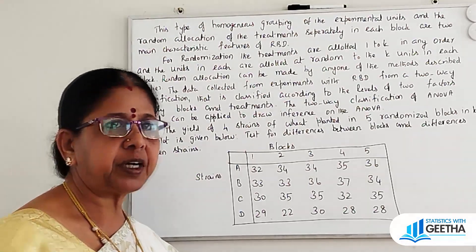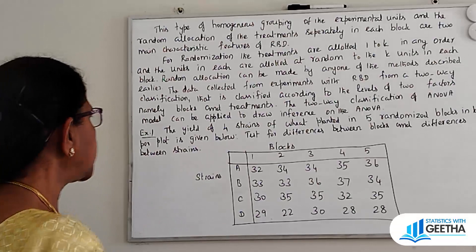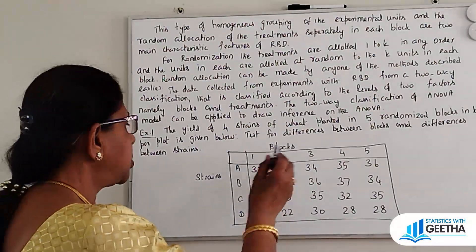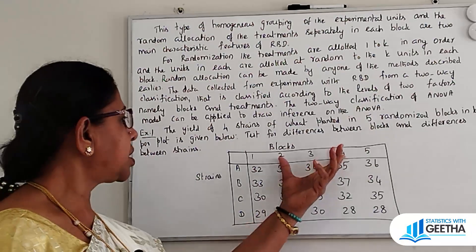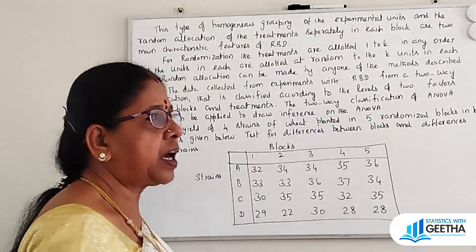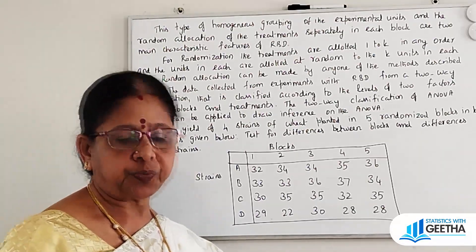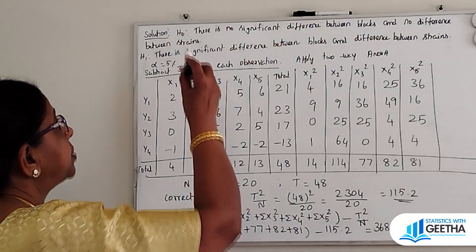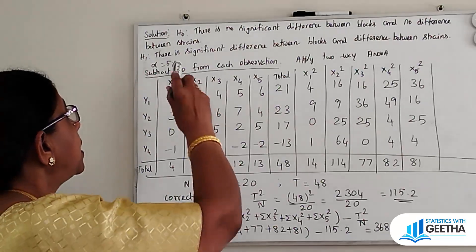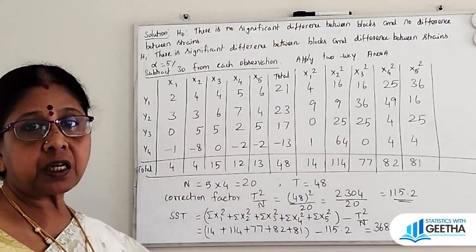In this example, the yield of four strains of wheat planted in five randomized blocks in kilograms per plot is given. We will test for differences between blocks and differences between strains. H0: there is no significant difference between blocks and no difference between strains. H1: there is a significant difference. Alpha is 5%.